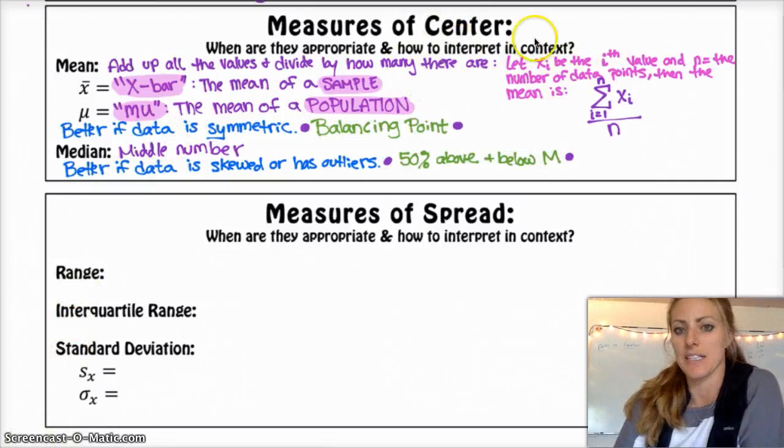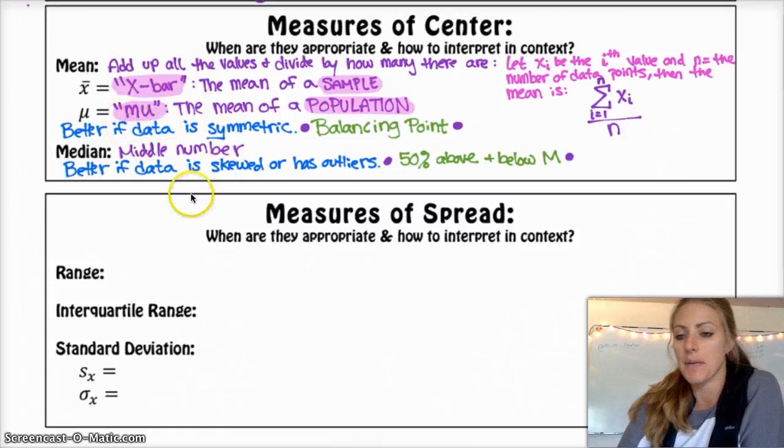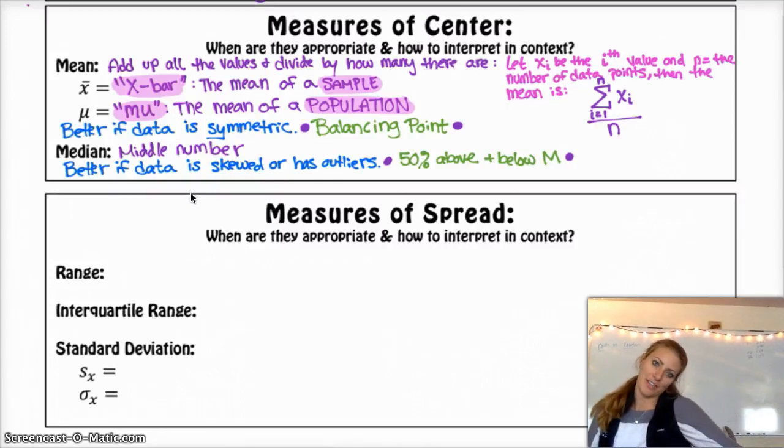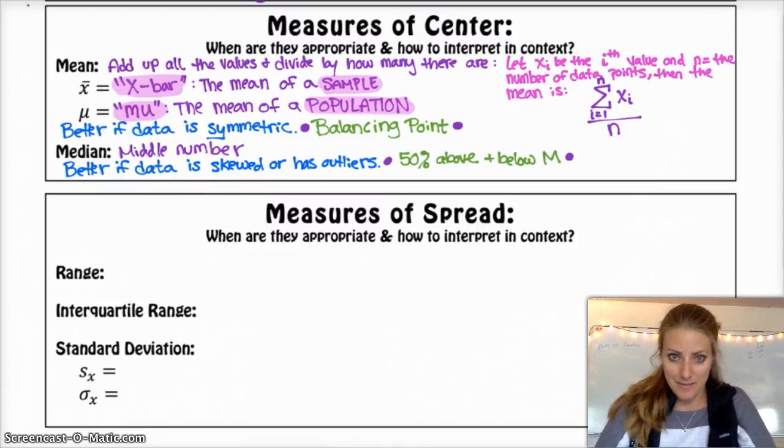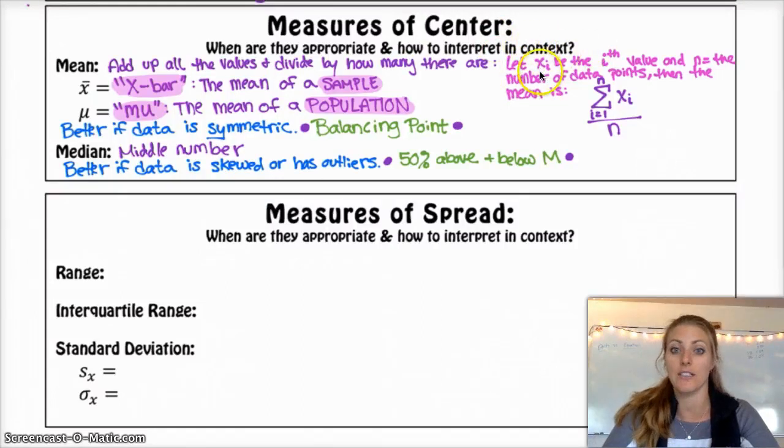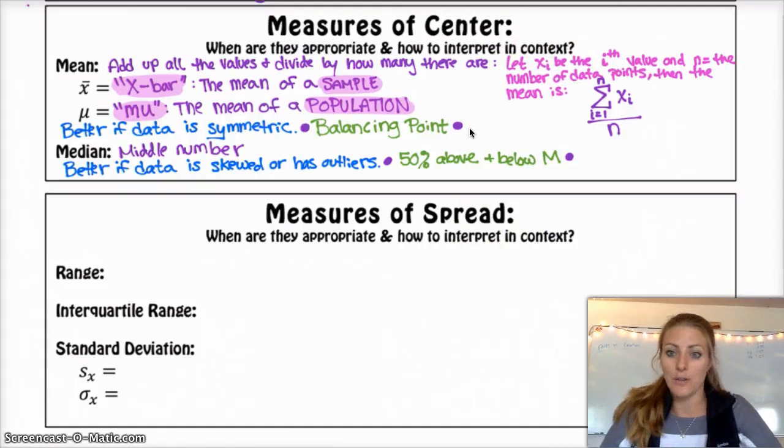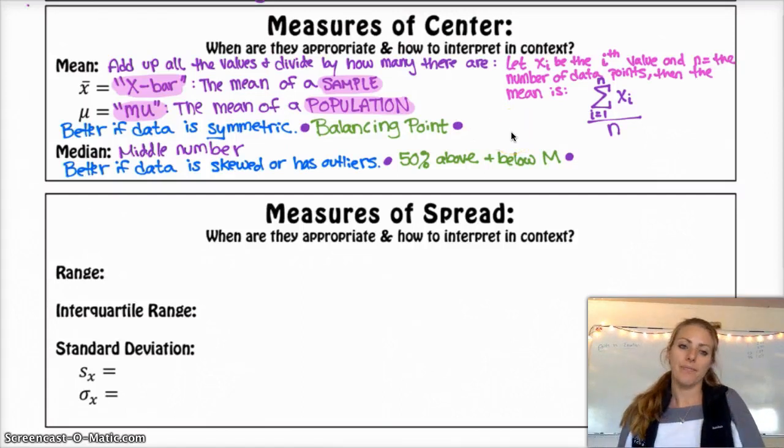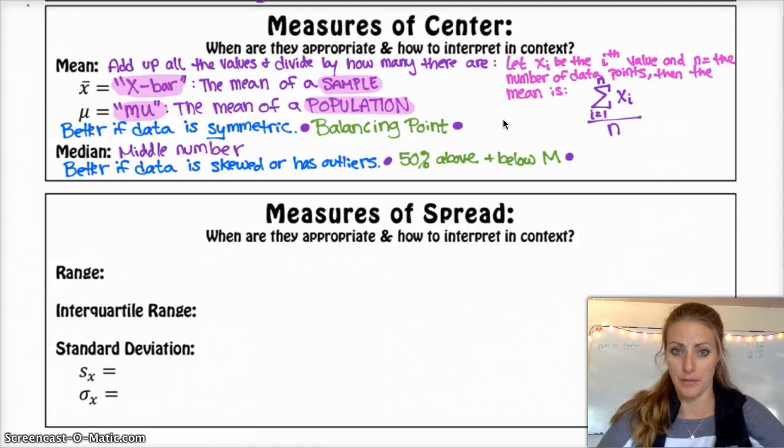Last but not least, how to interpret these things in context. The mean and the median are both considered averages. So you could say the average test score is blank. But any time you're interpreting a value in this class, it should always be in context. If the data is about test scores, you should include the average test score is blank. When you're in this class, use context.